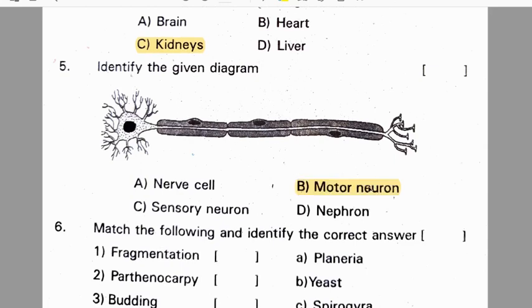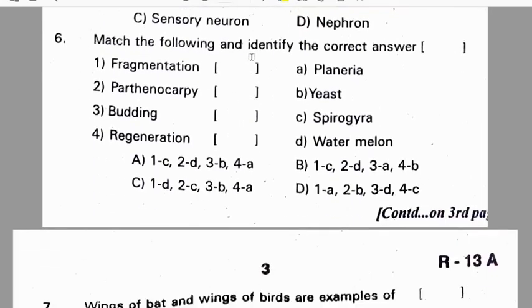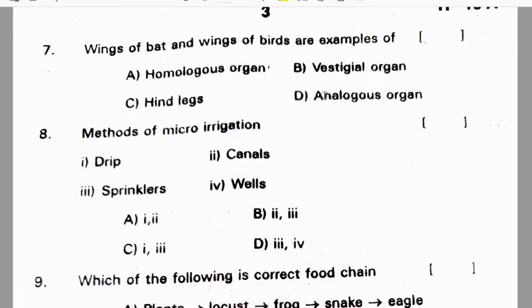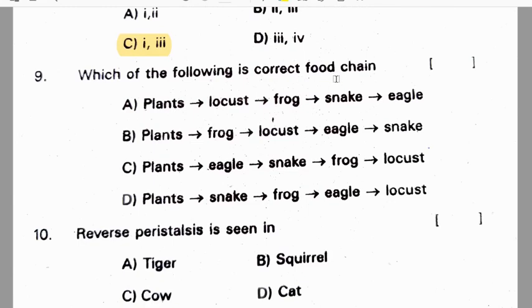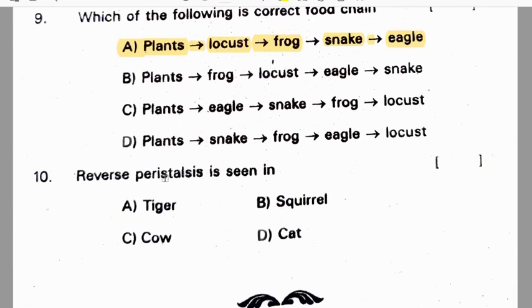Fifth question: identify the given diagram — it is a motor neuron, correct option is B. Sixth question: wings of bat and wings of birds are examples of analogous organs — correct option is D. Seventh question: methods of micro irrigation — correct option is 1 and 3, which are drip and sprinklers. Eighth question: identify the correct food chain. Ninth question: reverse peristalsis is seen in a cow.